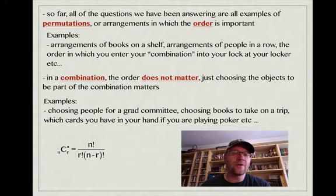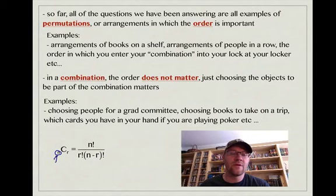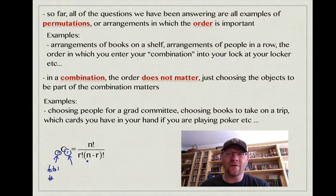Our combination button on our calculator is NCR. And NCR is N factorial over R factorial times N minus R factorial. Remembering that N is always your total number of objects, and R is the number that you're actually taking. So if you're picking five cards out of 13 and the order doesn't matter, it would be 13C5.